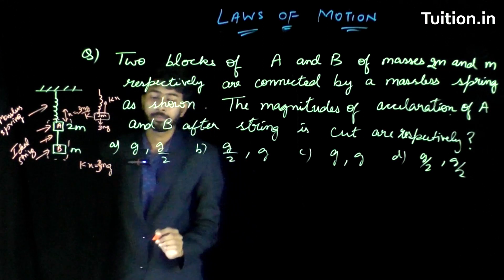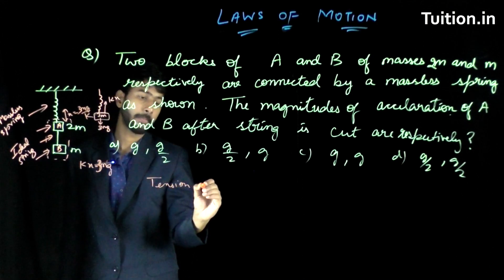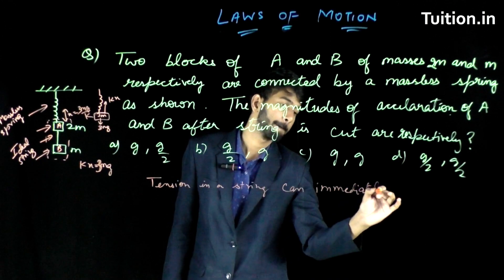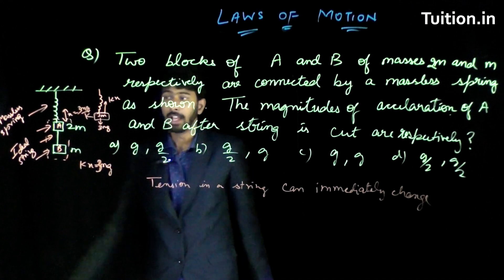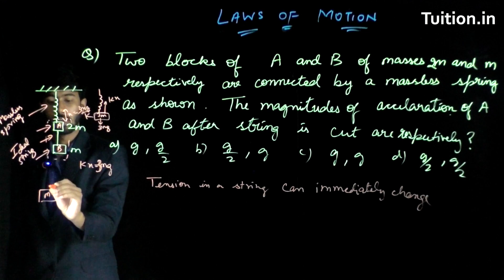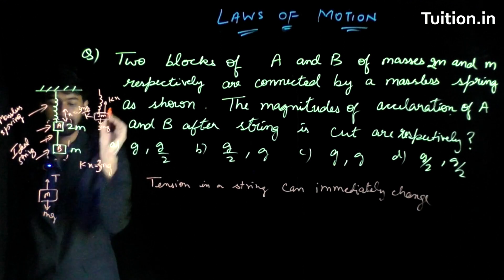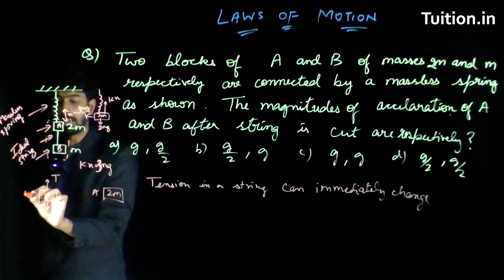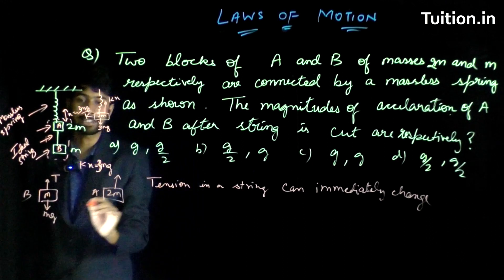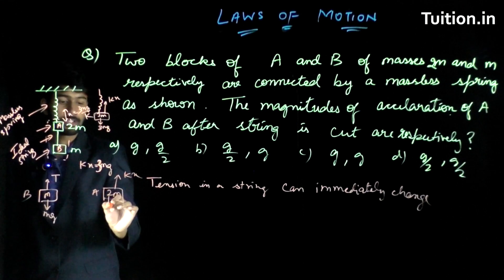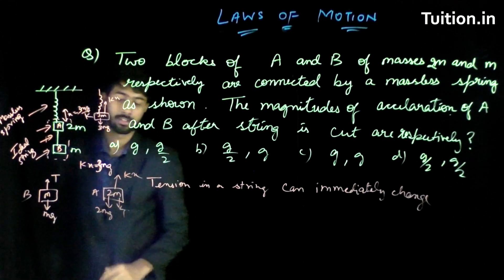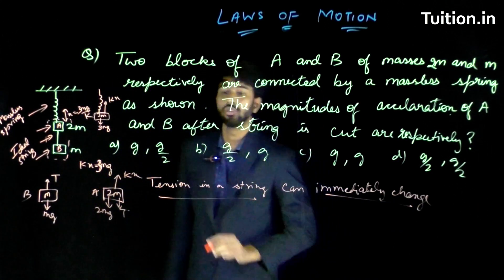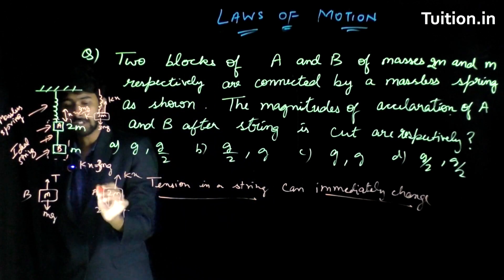Now, when the string is cut, remember one thing: tension in a string can immediately change. What does this statement mean? If I cut the string right now, before being cut there is a mass m, there is a tension t and there is mg which is balancing this. And if you look at 2m, which is your A and this is your B, there is kx acting on this and there is 2mg acting on this and there is tension acting on this. What you have to understand is tension in the string can immediately change. So if I cut the string here, this tension at that very instant can go down to zero.